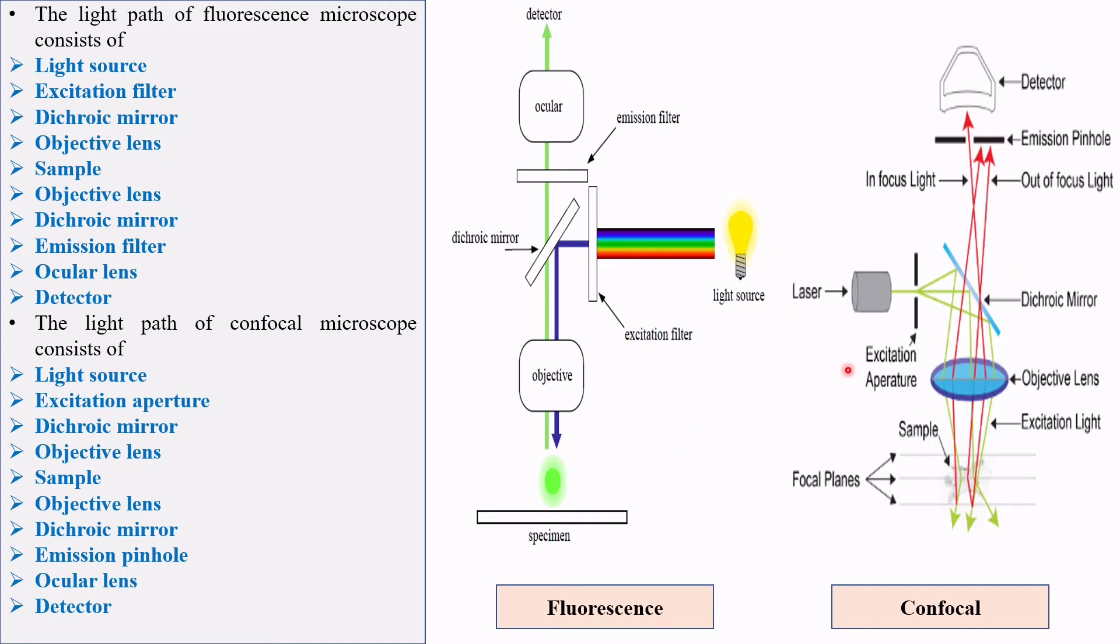In this picture, suppose you are selecting blue or green - blue in case of fluorescence and green in case of confocal. Excitation filter only allows blue or green. It will cut off other six wavelengths.